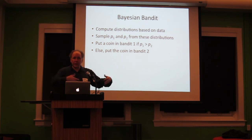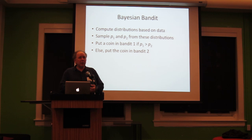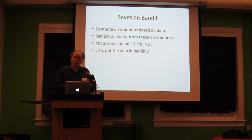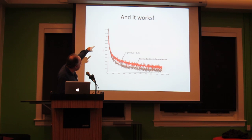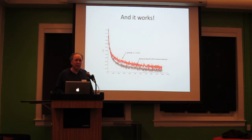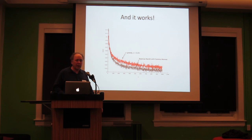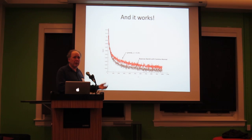This is a thing called Thompson sampling. It was invented in 1933 for no good reason because they didn't have computers back then. And just in the last two or three years, it's exploded because people have shown that the rate at which this learns — this is not quite the best algorithm. It's the best simple algorithm. It's almost as simple as the Bayesian Bandit. And the Bayesian Bandit outdoes the best algorithms known and certainly the best simple ones.